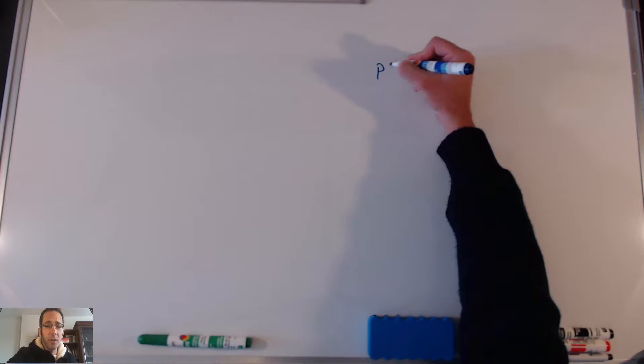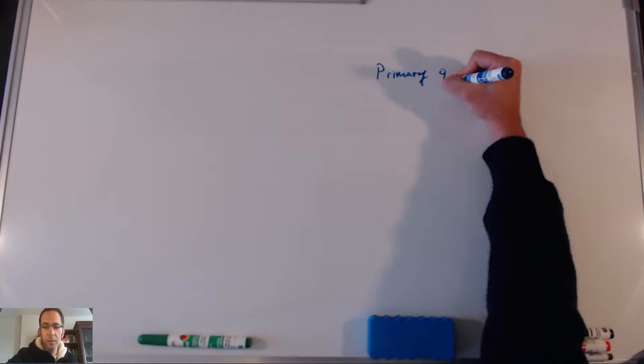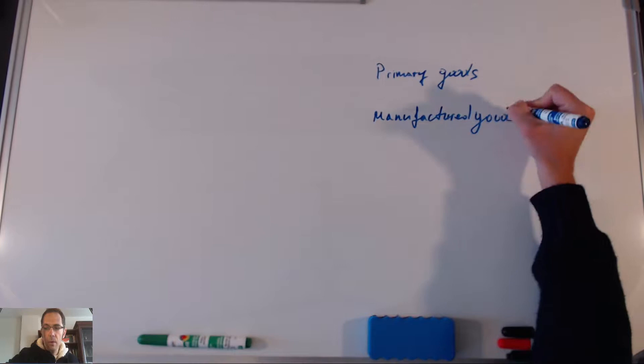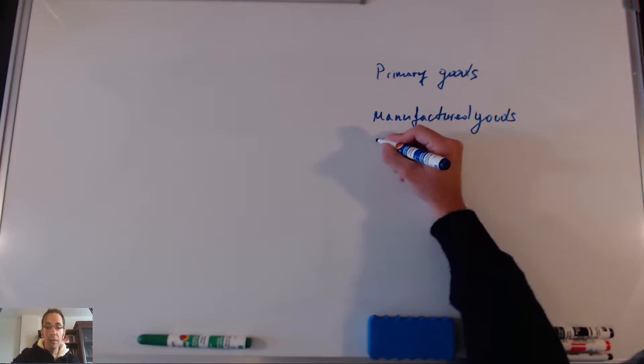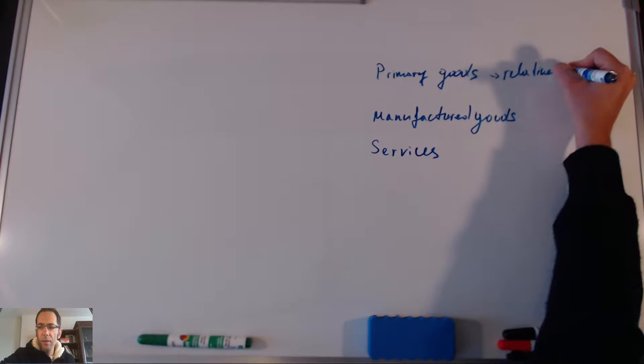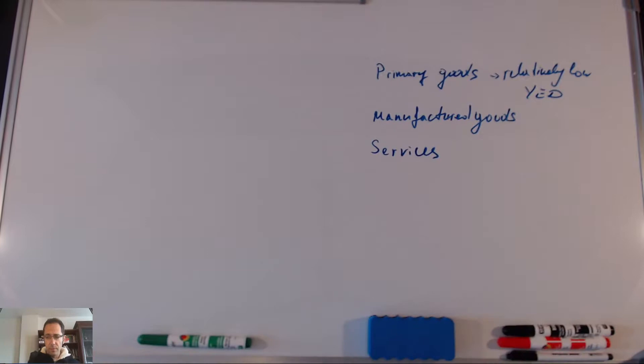The first thing we need to do is draw some conclusions about the kind of income elasticity of demand that different goods have. We'll look at three typical groups of products: we have the primary goods, the manufactured goods — which are our secondary goods — and then we have services, the tertiary goods. Primary goods tend to have relatively low income elasticity of demand, relatively low YED.